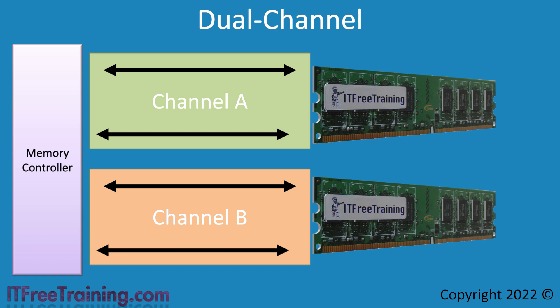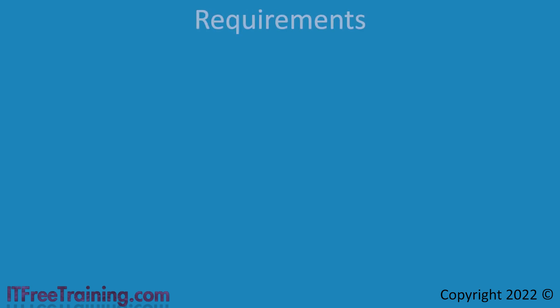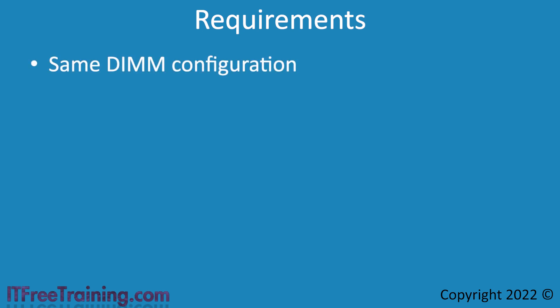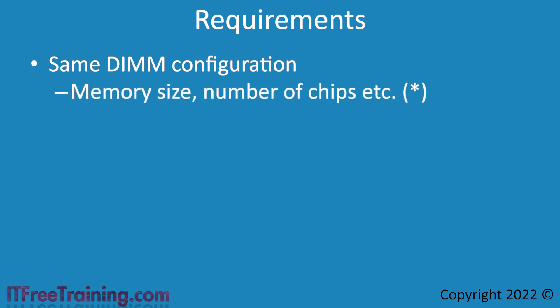I will look at triple and quad-channel shortly, but first the requirements needed to run multi-channel. In order to use multi-channel, the memory modules must have the same DIMM configuration — essentially they both need to be of the same size and have the same number of chips on them. Traditionally, you won't be able to mix, for example, a 4 gigabyte memory module with an 8 gigabyte memory module. If the memory modules have a different number of chips, most likely they will operate differently — how they access and transfer data will differ, so they will not work together.